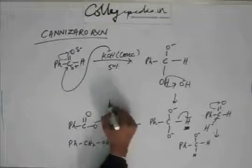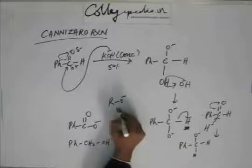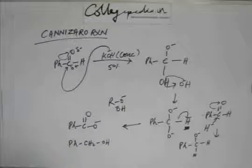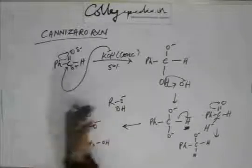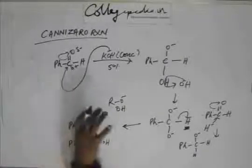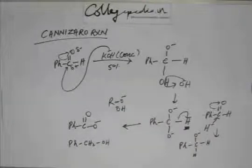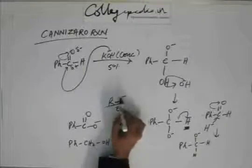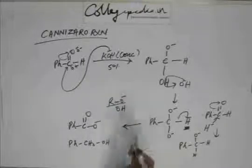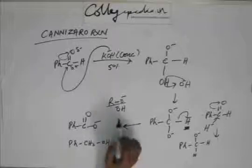Because RO- is less stable than OH- because R group has electron releasing effect and that releases more electron and increases the electronic density on oxygen and hence make this negative charge on oxygen more unstable, and that electron releasing effect is not there in OH.